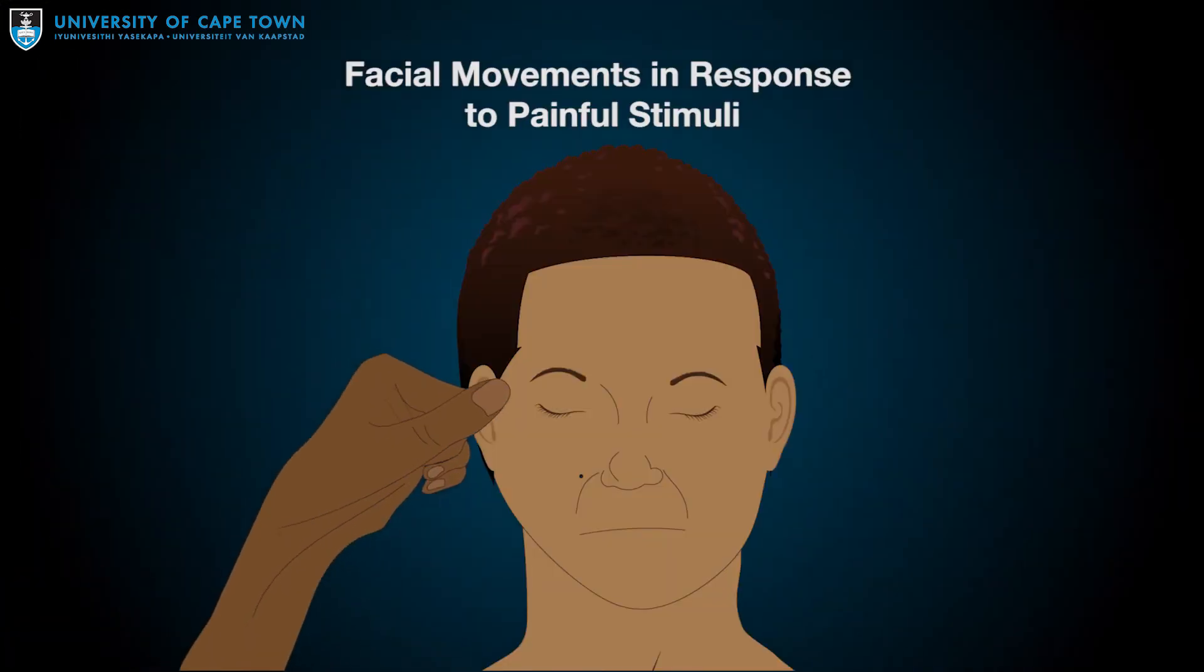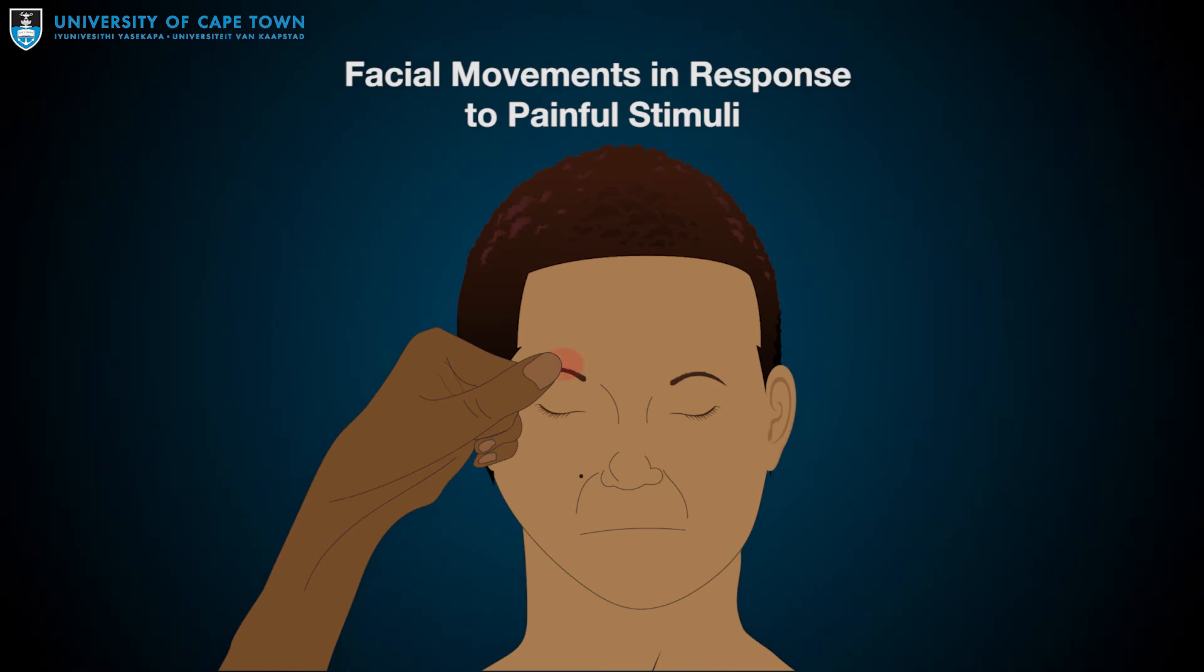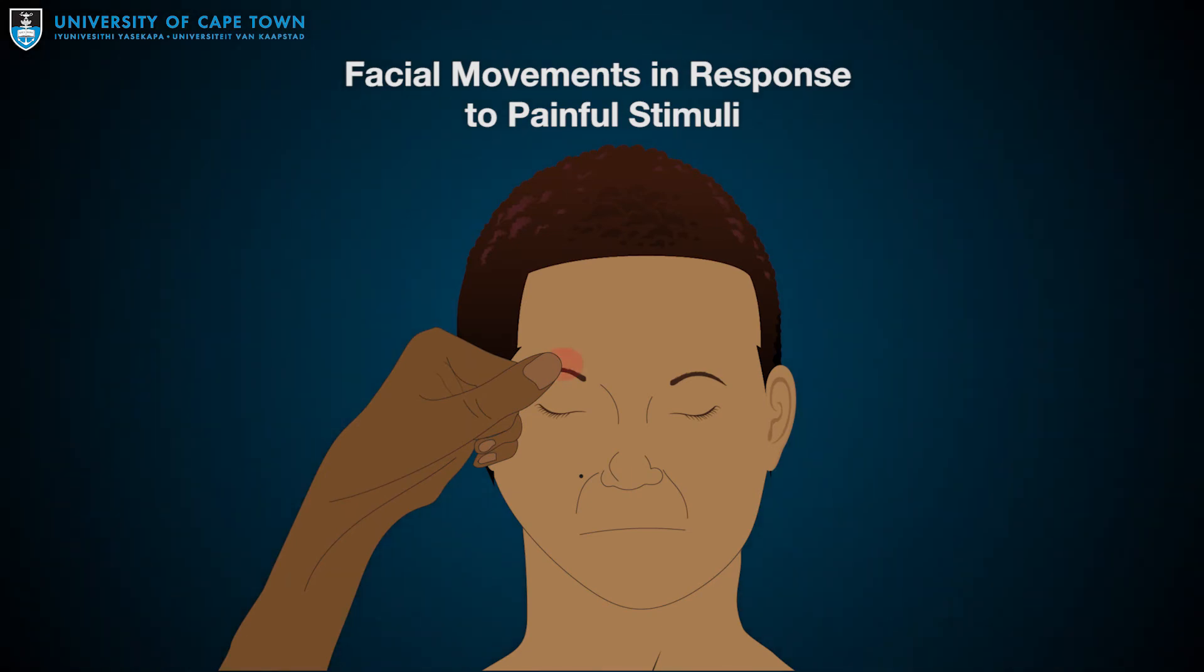Number six: there must be no facial movements in response to painful stimuli. This was tested when we were assessing for responsiveness, but it bears repeating as it tests cranial nerve five, the trigeminal nerve, which comes directly from the brainstem and supplies sensation to the face, and cranial nerve seven, the facial nerve, which also comes straight from the brainstem and controls the motor function of the facial muscles.